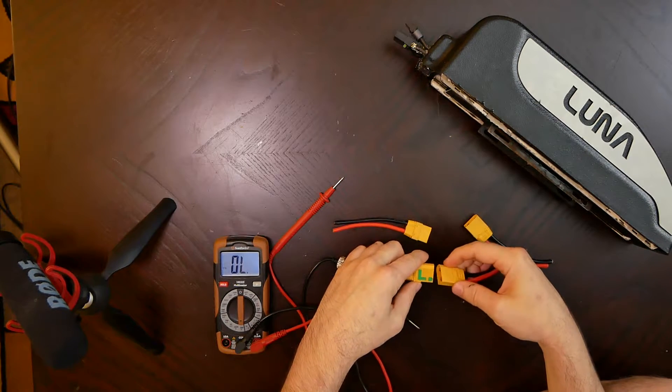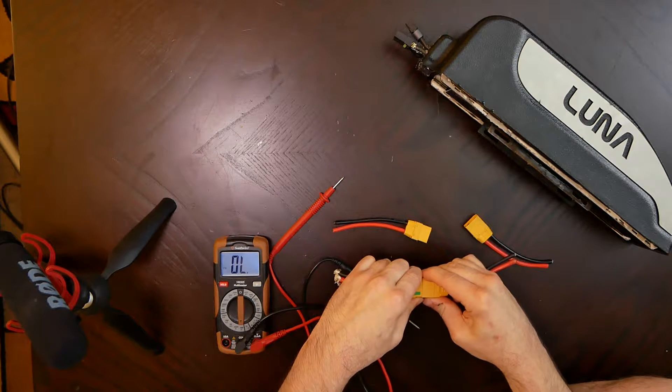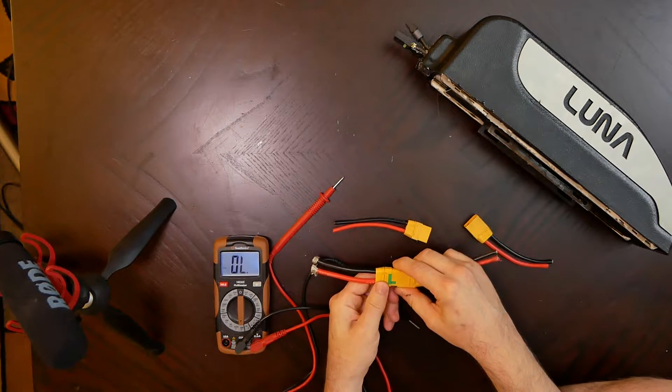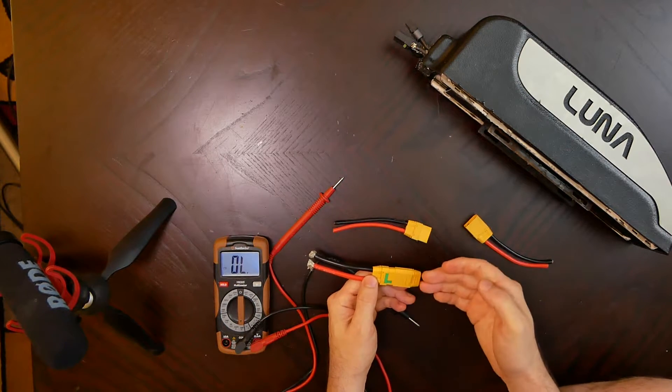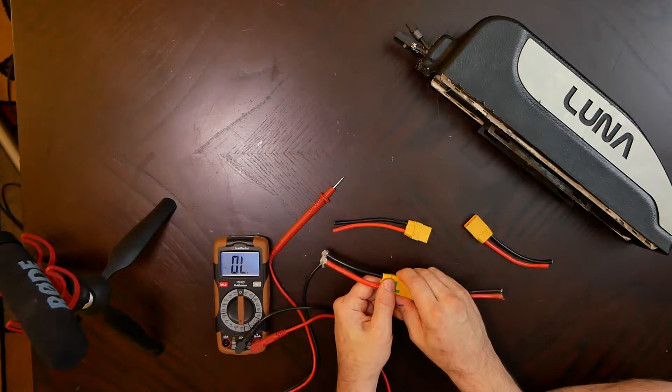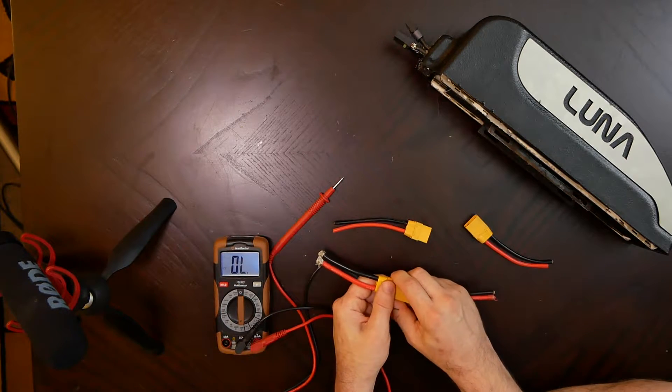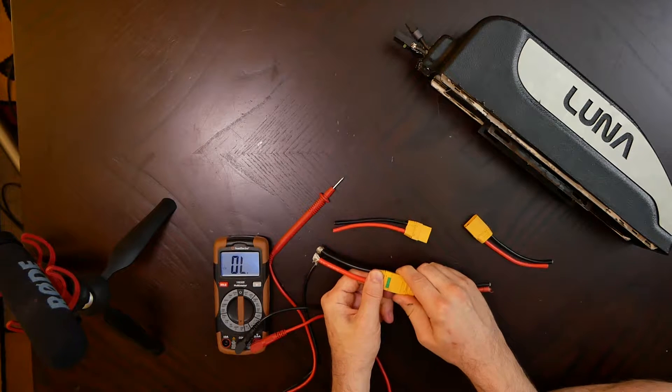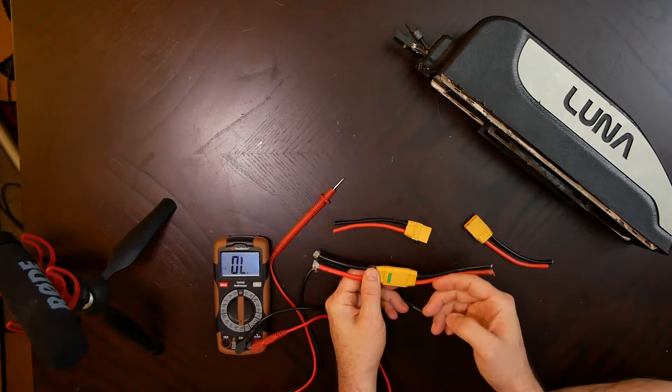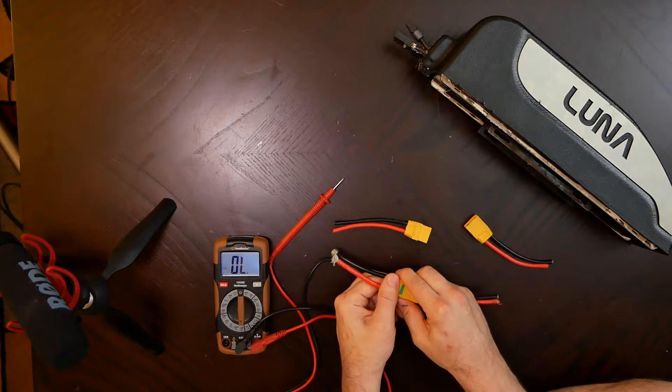It's that how that works is when you're pushing this in about halfway, it's sort of a partial connection. So it's allowing enough connections so that when you push it in the rest of the way, it's not going to create a spark which could corrode the contacts over time.